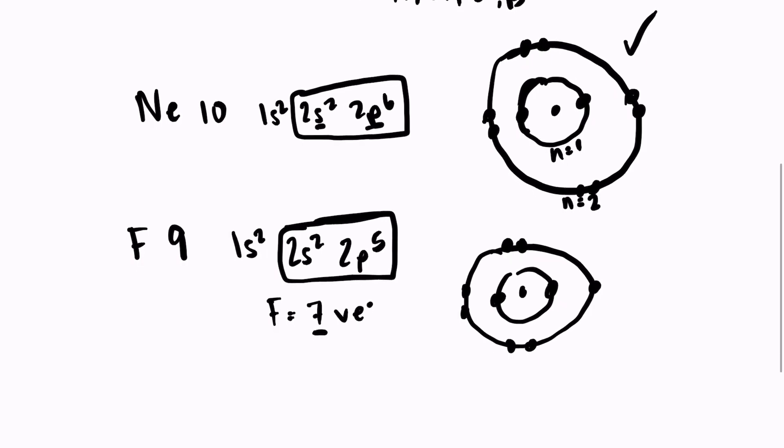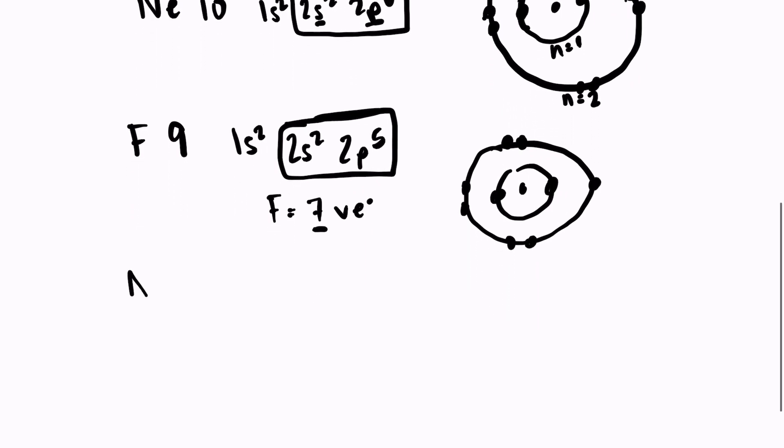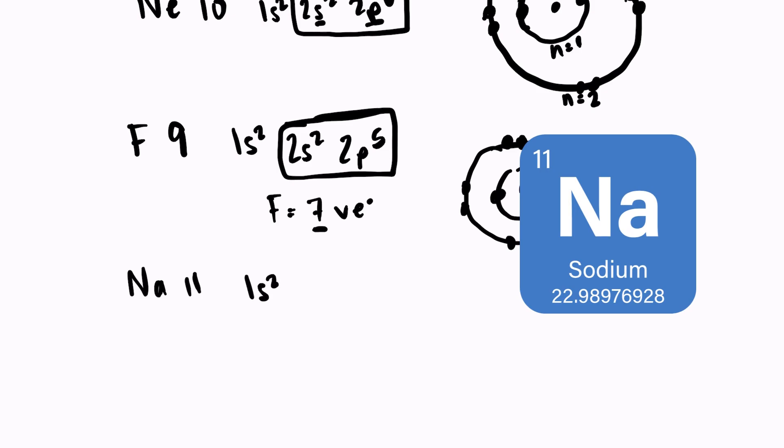Let's look at sodium. Sodium has an atomic number of 11. So the electron configuration would be 1s2, 2s2, 2p6, 3s1.